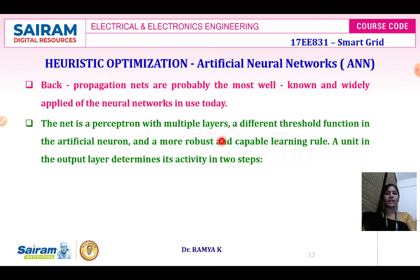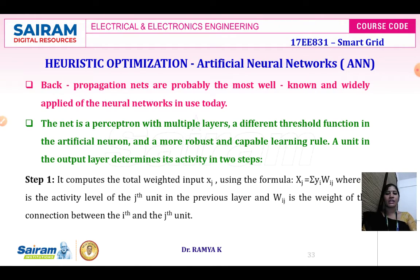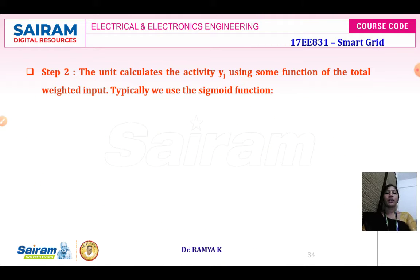The backpropagation net is a perceptron with multiple layers, a different threshold function in the artificial neuron, and a robust learning rule. A unit in the output layer determines its activity in two steps. First, it computes the total weight: XJ = Σ YI · WIJ, where WIJ is the weight processed for input XJ and YI is the activity level of the Jth unit in the previous layer. Second, we calculate the activity YJ using the sigmoidal function: YJ = 1 / (1 + e^(−XJ)).